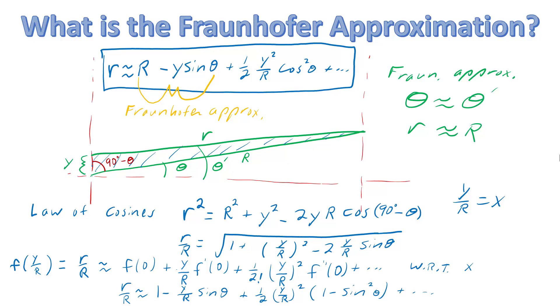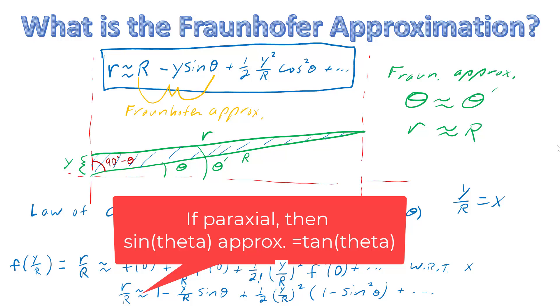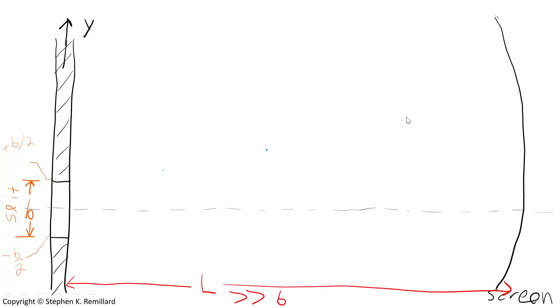And sometimes this is done in the paraxial limit, where sine of theta is set equal to tangent of theta. And this length out here, to the point where we're looking, divided by the distance to the screen, is then used as the sine of theta. Now let's turn to our optics problem.